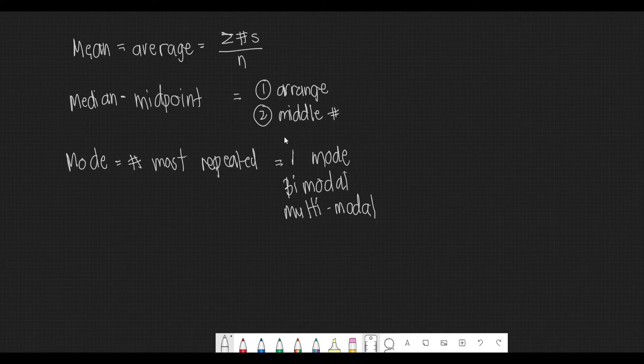Now, the mode is the number that is most repeated. So there could be one mode, two modes (that would be bimodal), or there could be three or more modes in that given set, and that is termed multimodal.